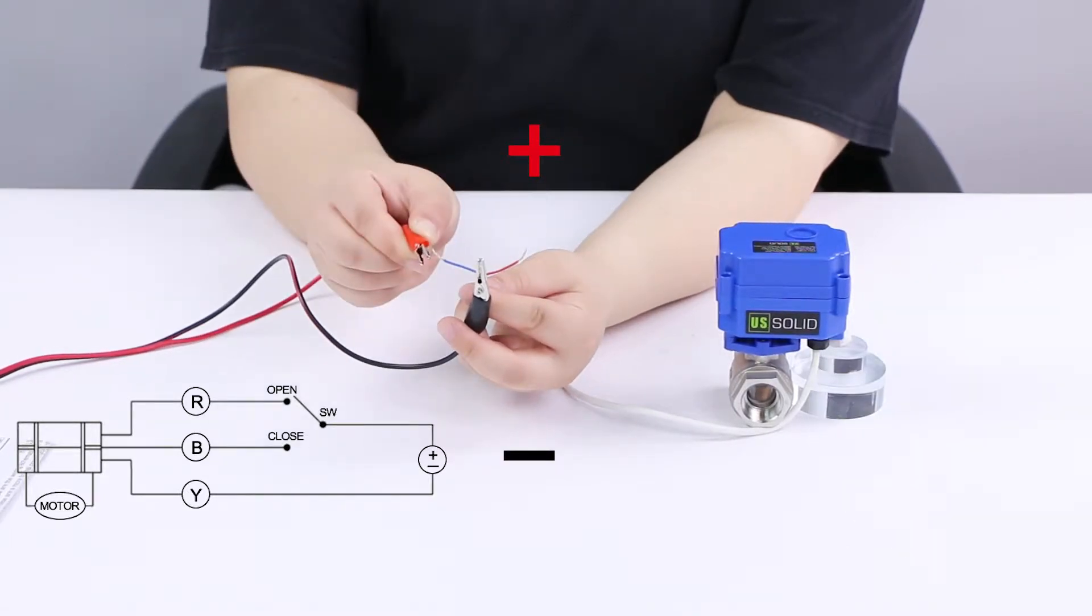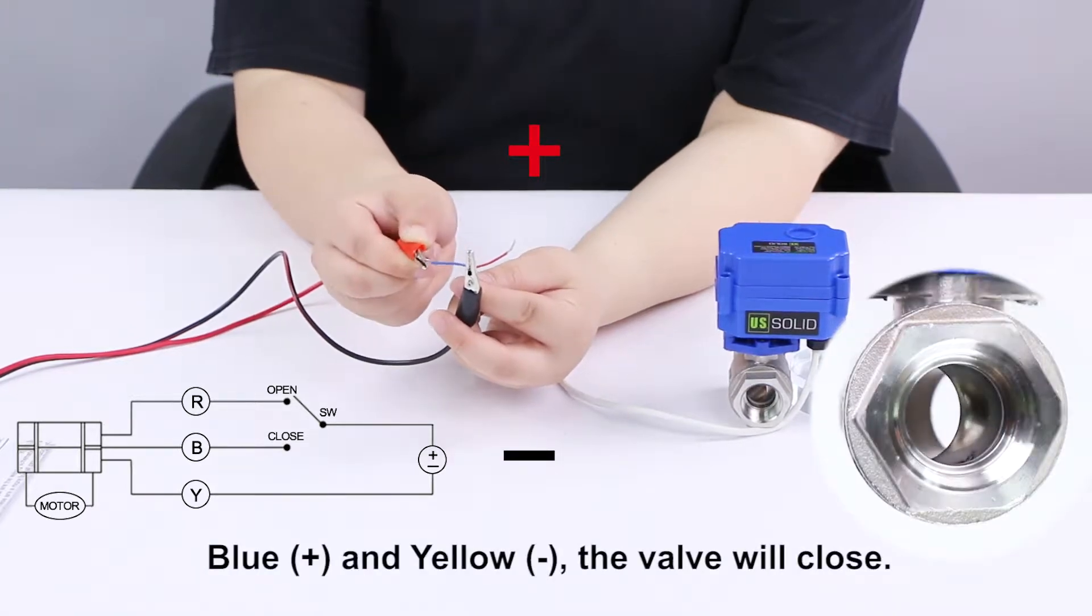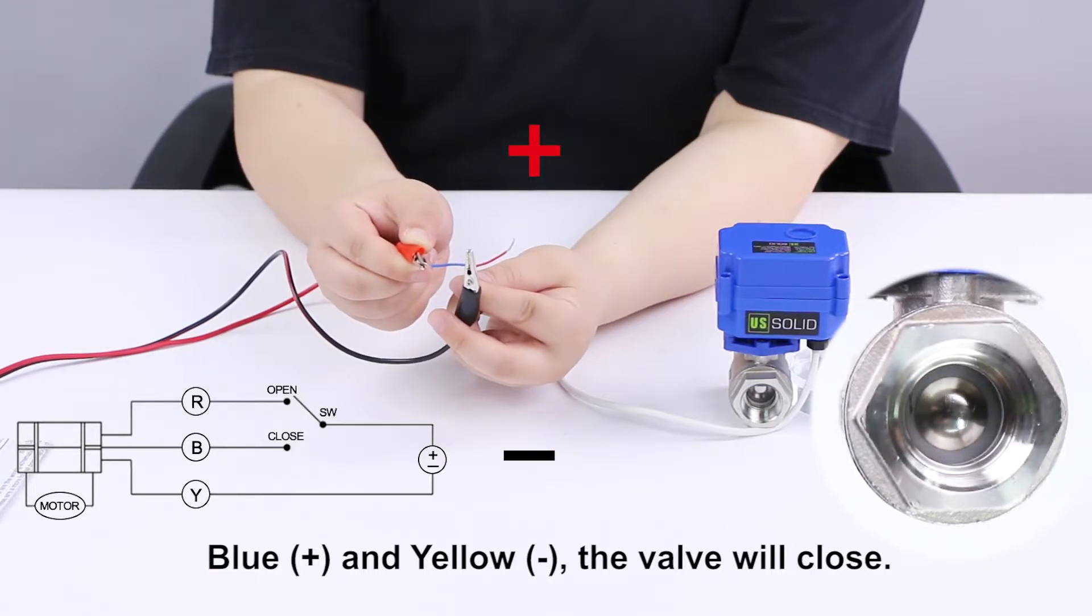In case of power loss, the valve will remain in its current position. When blue wire is connected to the positive pole, it will be fully closed.